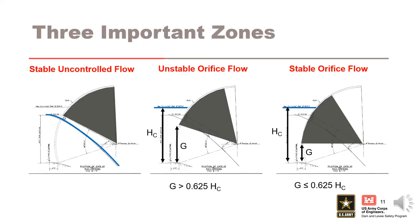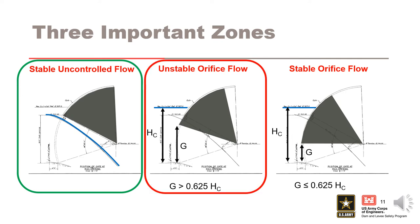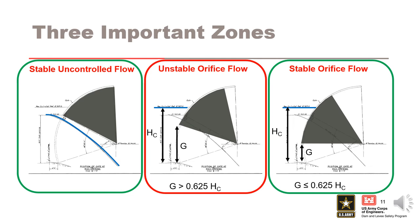There are three important zones to consider when evaluating discharge for a gated spillway. The stable uncontrolled flow zone occurs when the spillway gate is clear of the water surface profile such that the discharge will be governed by the basic weir equation. The unstable orifice flow condition occurs when the gate opening is large relative to the total head on the spillway crest, creating an unstable flow condition that typically results in vibration of the gates and machinery and surging of the water upstream of the gates. The stable orifice flow condition occurs when the gate opening is relatively small compared to the total head on the spillway crest. As a rule of thumb, the transition between unstable and stable orifice flow occurs when the gate opening is roughly 62 percent of the total head on the spillway crest, though this will vary for each project.